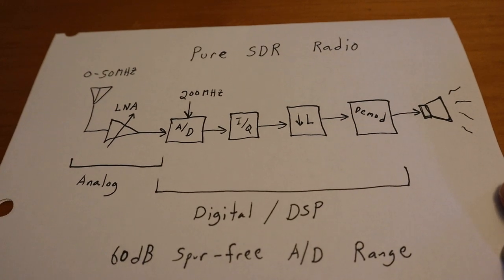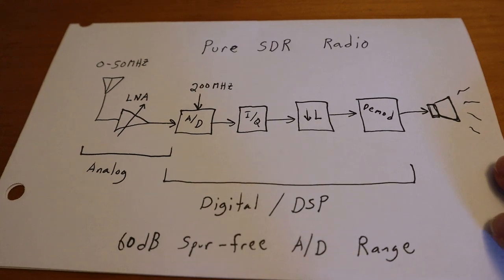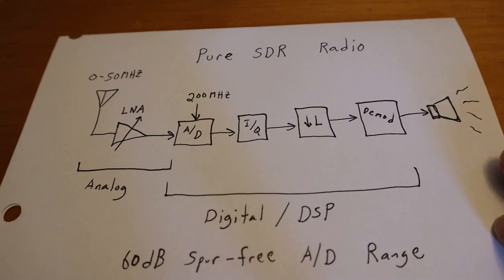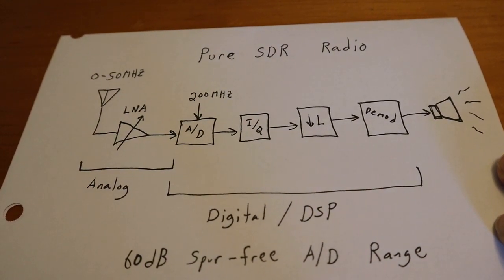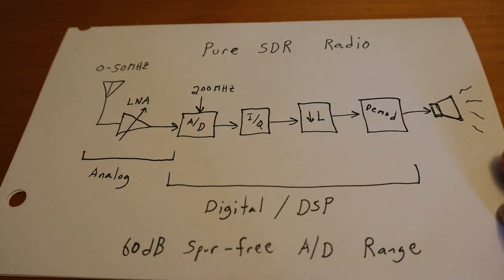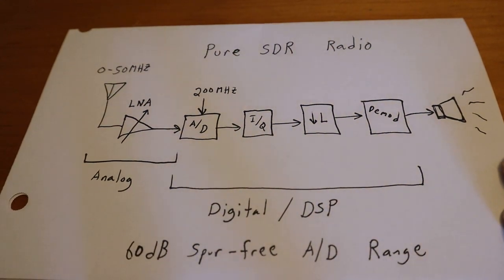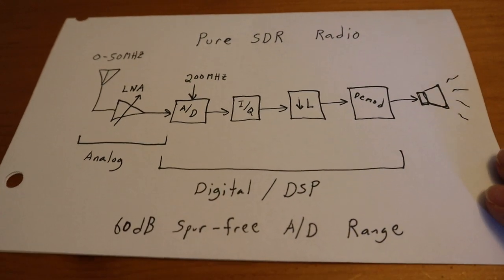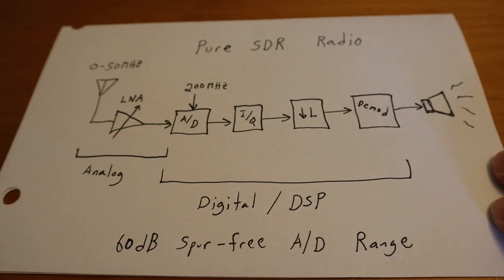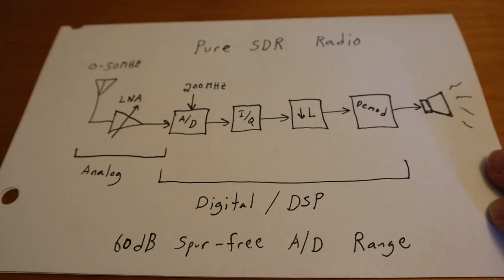So let's just say you work for a Whizbang HF receiver company, and this new Whizbang kid right out of college says we don't need to build no stinking filters, we don't need no mixers, we can just put everything in DSP, and all we just need is DSP and antenna, and that's all we do.